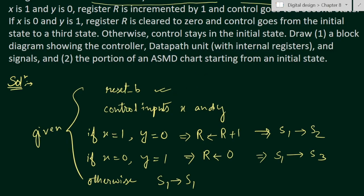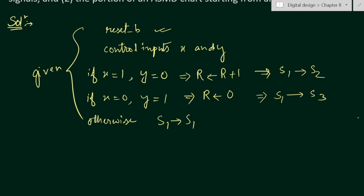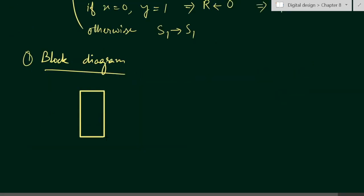We have to draw the block diagram showing the controller and data path unit with internal registers and signals. In the second part, we have to draw the portion of the ASMD chart starting from initial state s1.